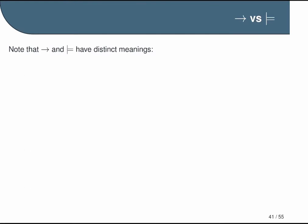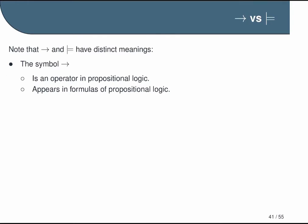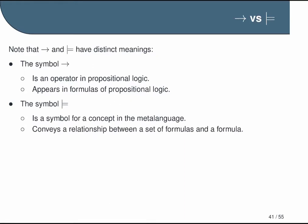I pointed out previously that there is a distinction and also a connection between the biconditional symbol and the symbol for logical equivalence. And the same thing is true for the implication symbol and the symbol for logical consequence. The implication symbol is an operator in propositional logic and it appears in the formulas of propositional logic. The double turnstile symbol, on the other hand, like the equivalence symbol, is a symbol for a concept in the metalanguage and it conveys a relationship between a set of formulas and a formula.